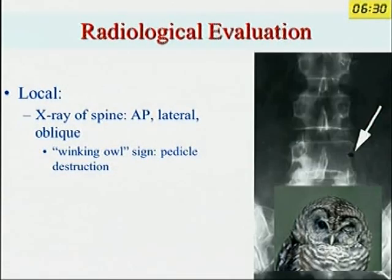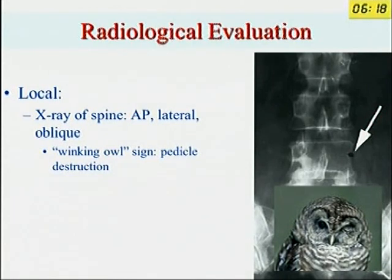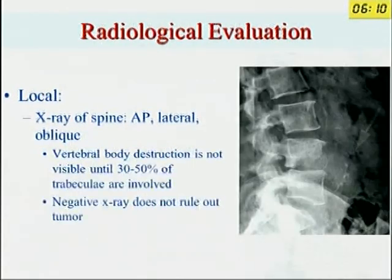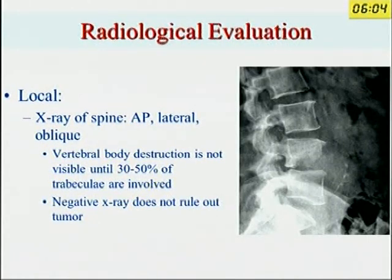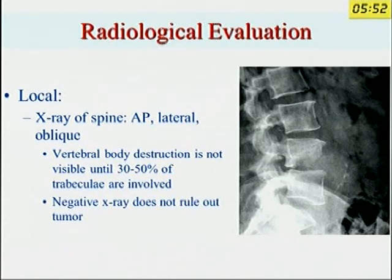On X-ray, you can see the pedicle area — here one pedicle is missing. This is called the 'winking owl sign': one side of the pedicle is destroyed and only one side will be seen on X-ray. A problem with X-ray is that up to 30 to 50% of vertebral destruction has to be present before it is visible. A negative X-ray won't rule out any tumor.